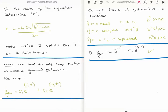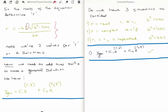The roots of the equation determine r. It's a quadratic equation, so we use the quadratic formula: r = (−b ± √(b²−4ac)) / 2a. Notice that we have two values for r because of the plus or minus, meaning we get two solutions — r₊ and r₋.